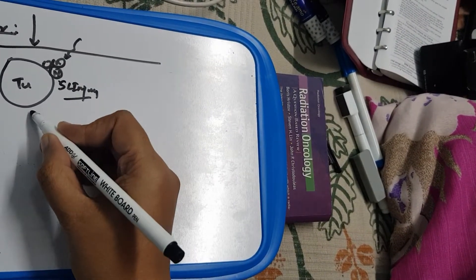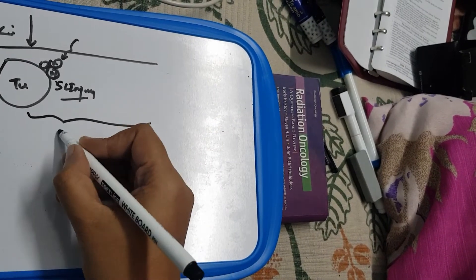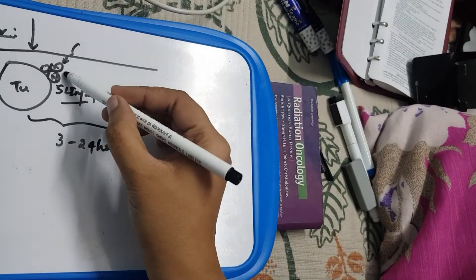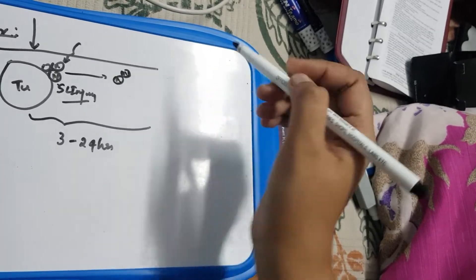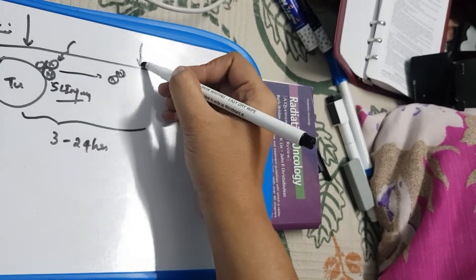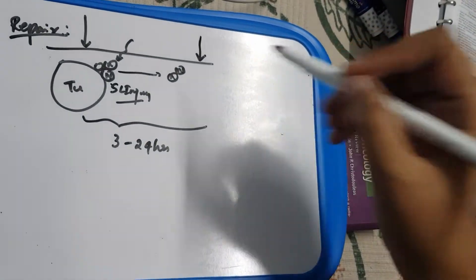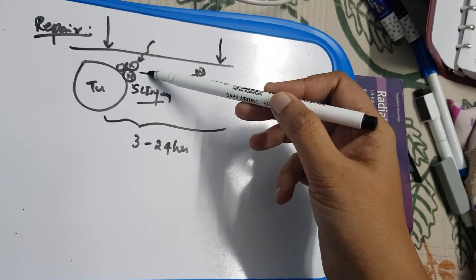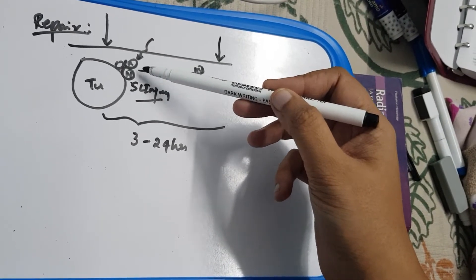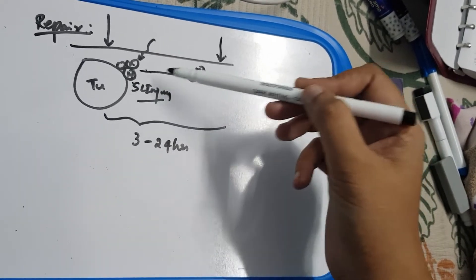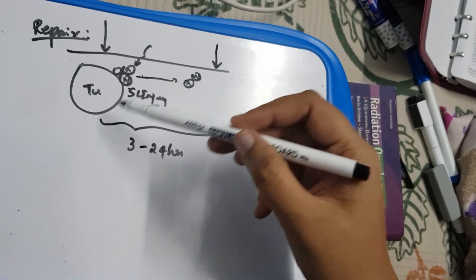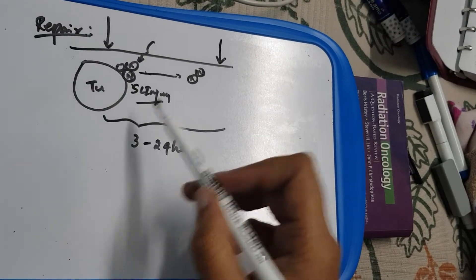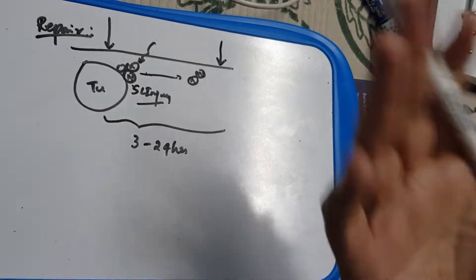These normal cells will undergo some sublethal damage — they will have sublethal injury. The basis here is that they will require some time to get repaired. That time is usually 3 to 24 hours post-radiation. After 3 to 4 hours post-radiation, they will repair themselves and become normal cells again, allowing you to give another fraction of radiation. This gives a potential therapeutic advantage over the tumor cells.